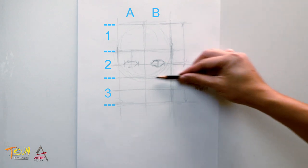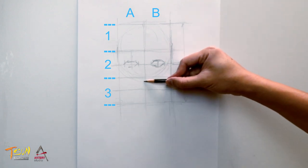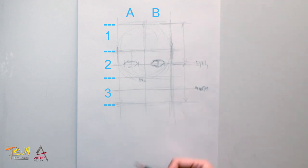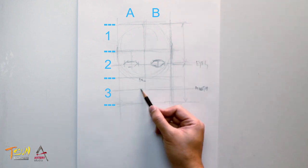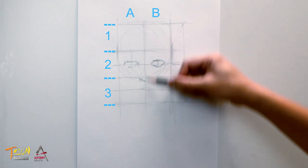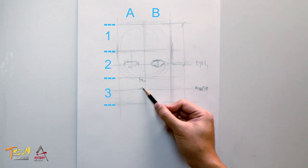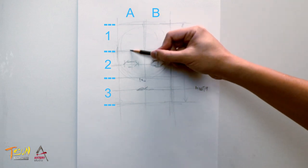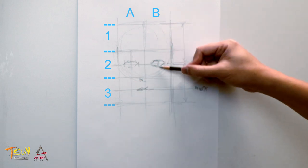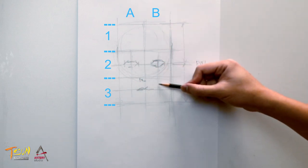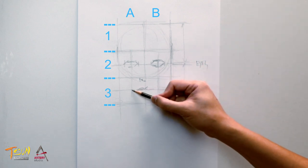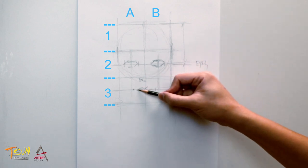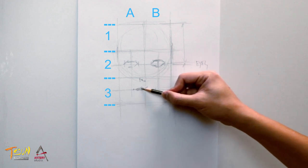Then we can start drawing the nose, which is located slightly under the bottom line of the second grid row. Let's also draw the lips. As mentioned, the mouth is located on the middle line of the third grid row. For the width of the mouth, you can extend lines down from the middle of the eyes — the width of the mouth is slightly smaller than the gap those two lines create. Of course, the width varies from person to person.